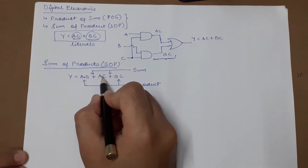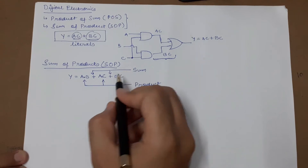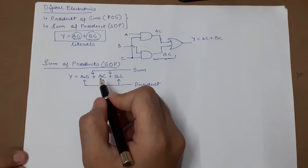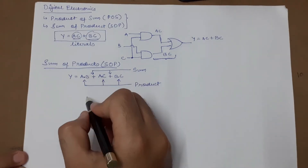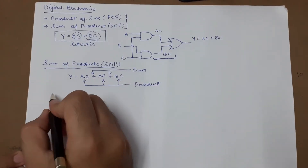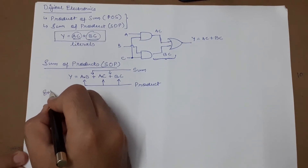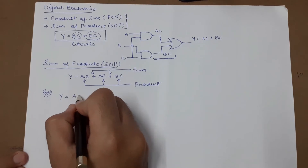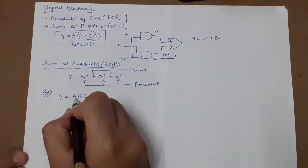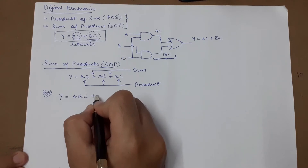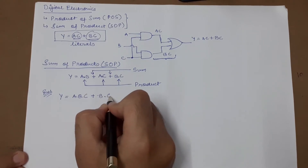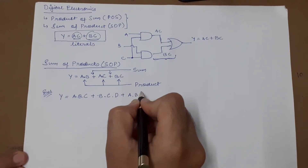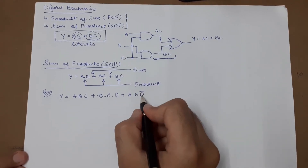Here you can see that the plus operator represents the OR function, and the dot between terms represents the AND function. This way the sum of products can be expressed. One example is Y equals A·B·C plus B·C·D plus A·B·D̄.